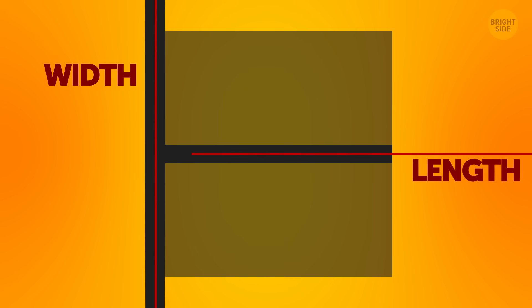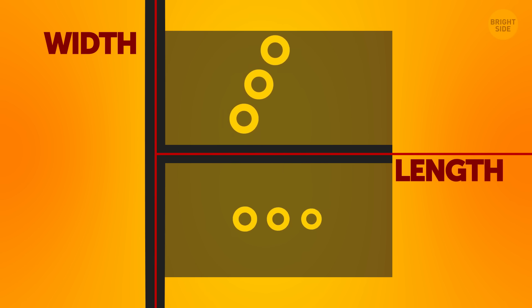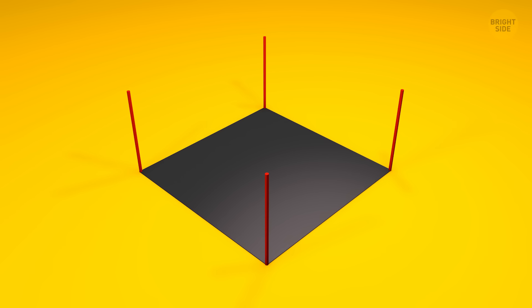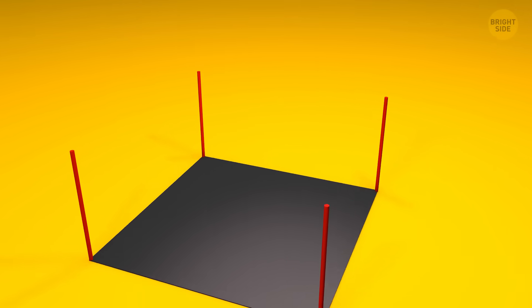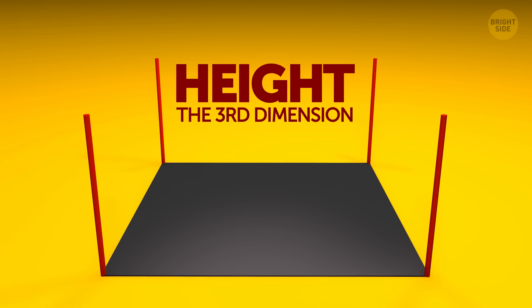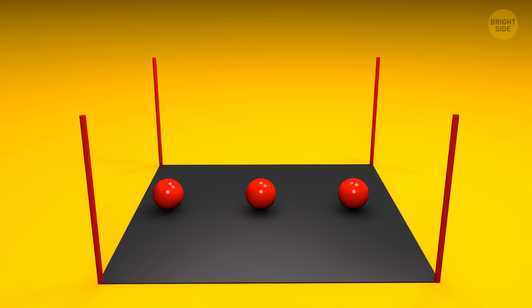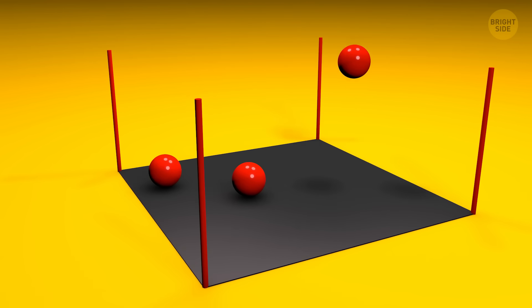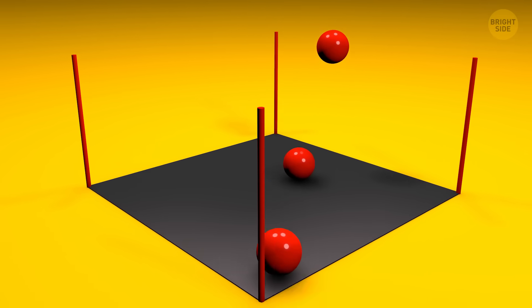Now, we'll add another line perpendicular to the one we have. We get a flat surface with a length and width, like a piece of paper. The flat creatures that live in a 2D world can move left and right, and now forward and backward. To turn this flat paper world into one we're more familiar with, we draw parallel lines from each corner of the square. Now we get height, the third dimension. Objects have three measures – length, width, and height. They can move left and right, back and forth, up and down.